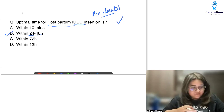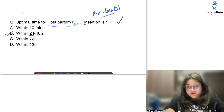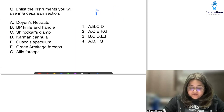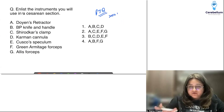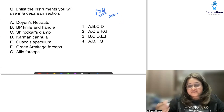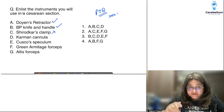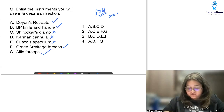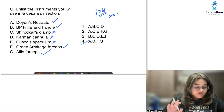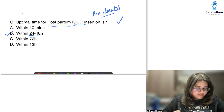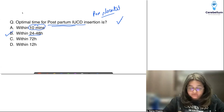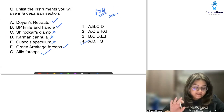This was also a repeat question — the exact same question from 2021 or 2022 INI — about which instruments you use in a cesarean section. We will use Doyen's retractor, a BP knife and handle. We don't use Shirodkar — that's used to lift the uterus in hysterectomies. Karman's cannula is used for MTPs, Cusco's for vaginal examination. Green Armitage and Alice forceps are straightforward inclusions. So A, B, F and G would have been the correct answers.